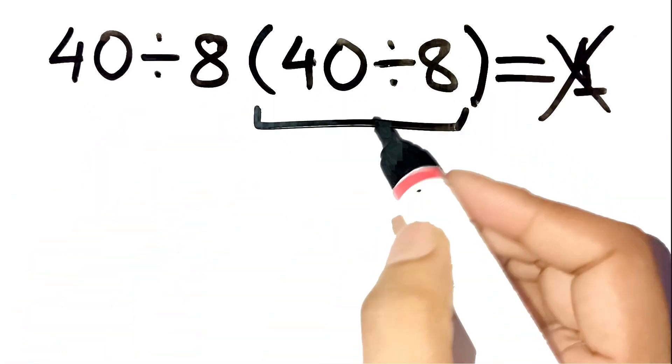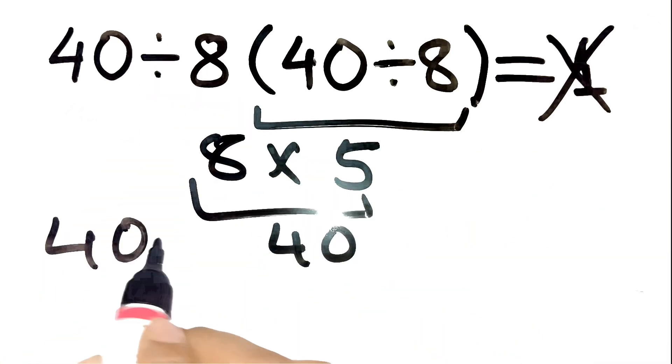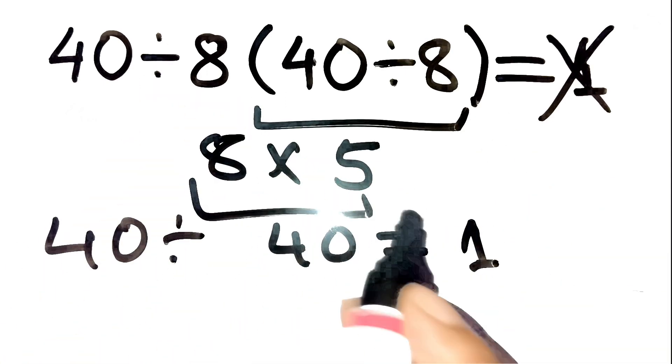Inside the parenthesis, 40 divided by 8 is 5. Multiply by 8, that's 40. 40 divided by 40, boom, 1. Sounds convincing, right?